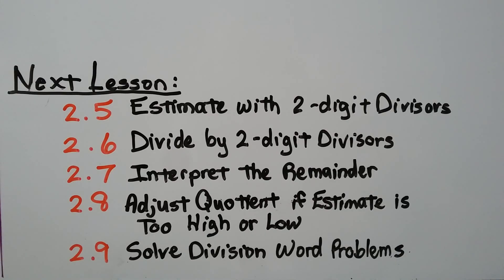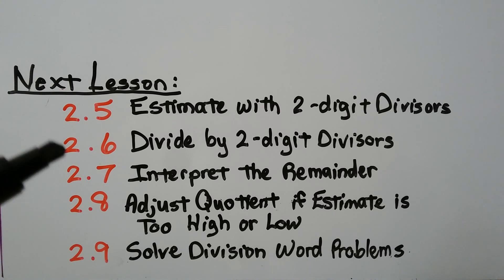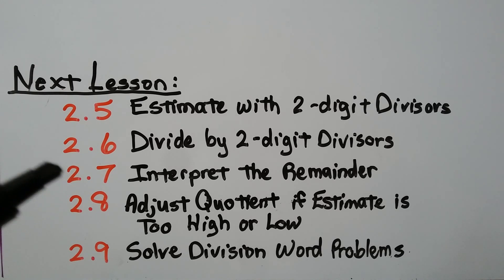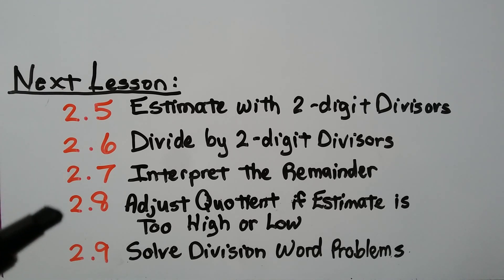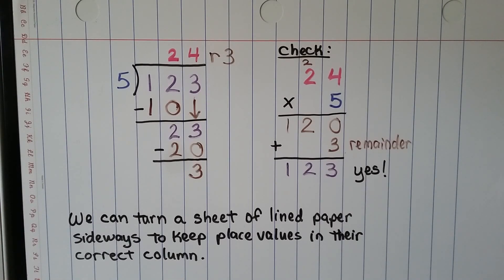I might tell you at the end of the video what the very next lesson is. When we get to 2.6 — we're only at 2.4 right now — the next video is 2.5: Estimate with Two-Digit Divisors. Then 2.6 is long division by two-digit divisors. Then we'll talk about what we can do with the remainder — it can be a numerator of a fraction — then adjusting a quotient, and then word problems. Remember, we can turn a sheet of lined paper sideways to keep our place values in their correct column, useful for addition, subtraction, multiplication, or division.